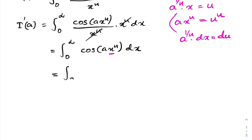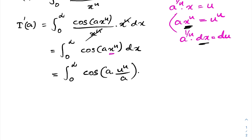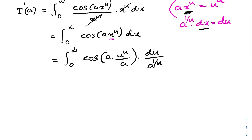Plugging in, the limits remain 0 to infinity, and we substitute ax^n = u^n. After substitution the factors of a cancel, and we pull 1/a^(1/n) outside the integral, giving (1/a^(1/n)) times the integral from 0 to infinity of cosine of u^n du.